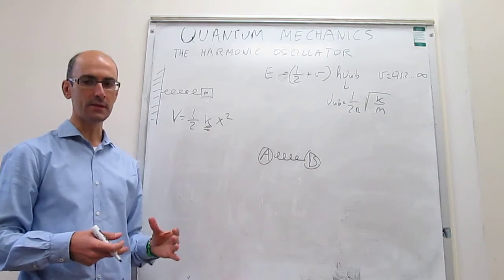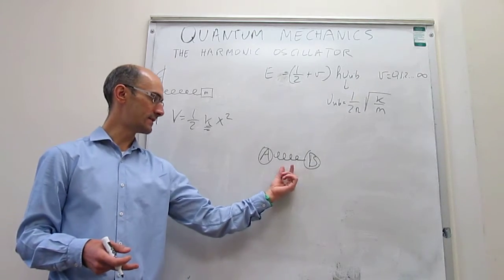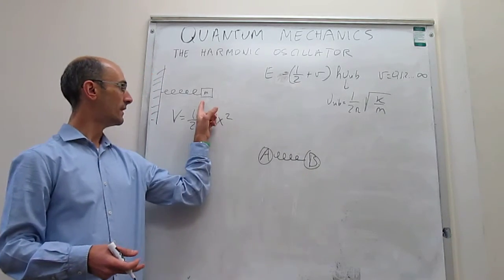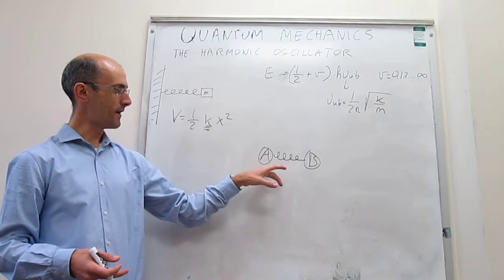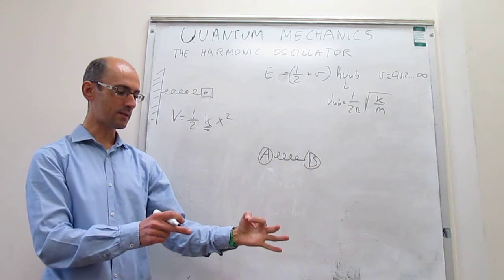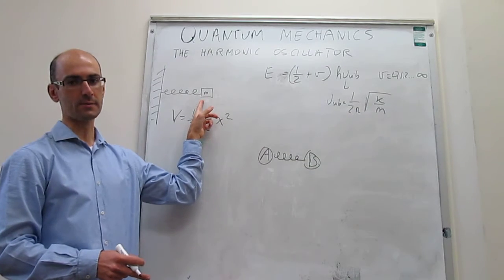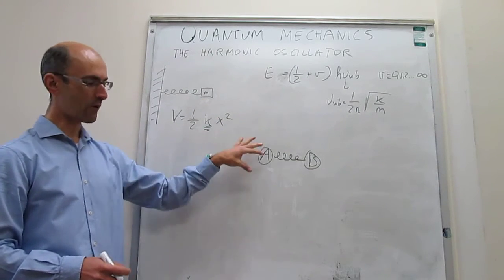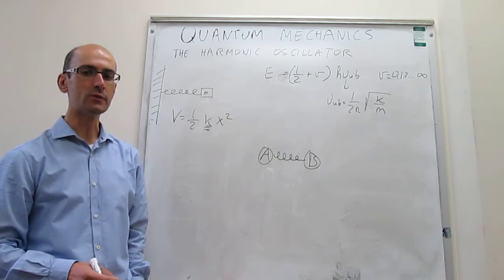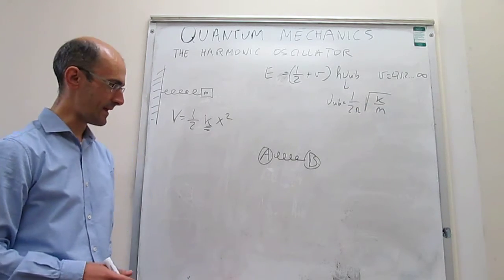You will notice how there seems to be a strong difference between this diatomic molecule and this harmonic oscillator: here you have two masses connected by a spring, but here you only have one mass connected by a spring. It turns out that both problems are mathematically equivalent if you make use of something called the reduced mass.